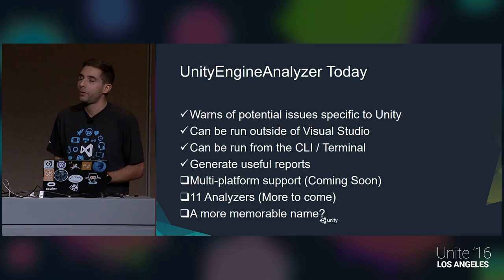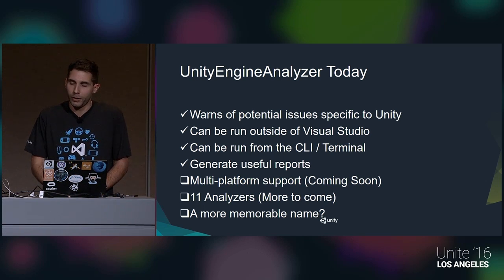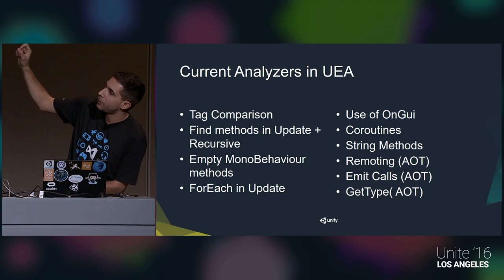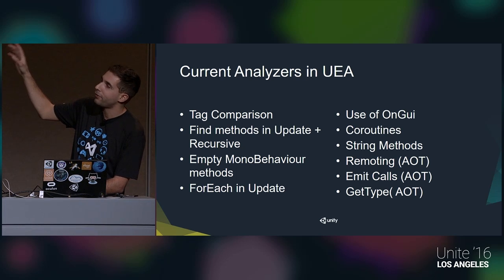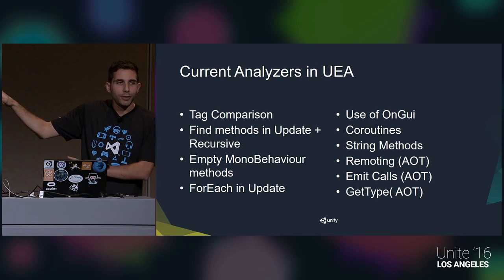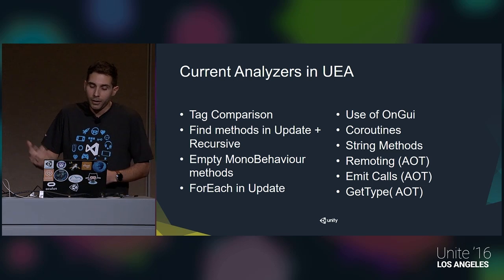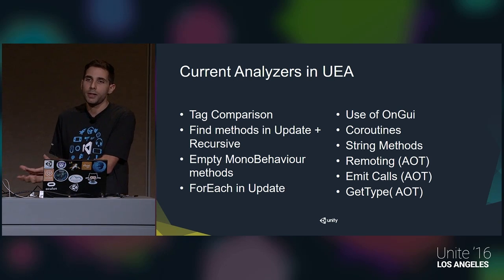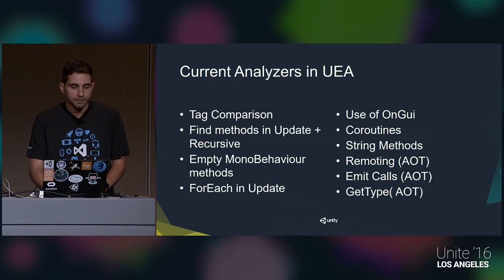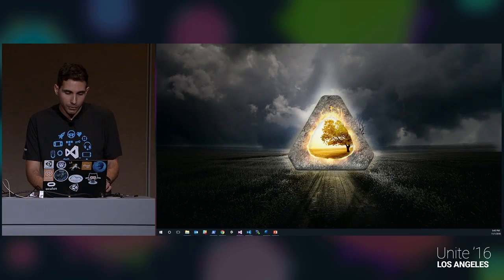I started working on it and contributing to it. Right now we're up to 11 analyzers, and I'm adding them as I go - if you come up with ideas, feel free to send a pull request. One thing I really want to do is make sure it runs on .NET Core, which will run on any platform. Currently we look for tag comparisons, Find methods in Update (recursive), empty MonoBehaviour methods, ForEach, and several others.